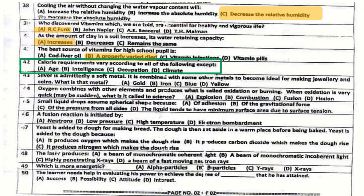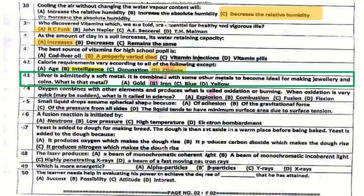Question number 42: Calorie requirements vary according to all of the following except climate. Question number 43: Silver is admittedly a soft metal; it is combined with some other metals to become ideal for making jewelry and coins.